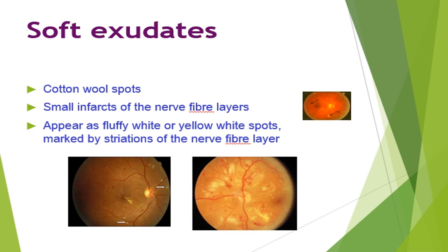When we compare soft exudates and hard exudates: the hard exudates are lipids which leak, and they are very refractile, quite deep, small, and have well-defined borders. Whereas the cotton wool spots are larger, irregular, and superficial in their position.